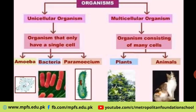Point number three: in unicellular organisms, a single cell performs all the functions of life — such as growing, moving, digesting, excreting waste, and reproducing. All life functions are performed within that one single cell. Imagine — while our bodies have billions of cells, some organisms carry out all life functions with just one cell.